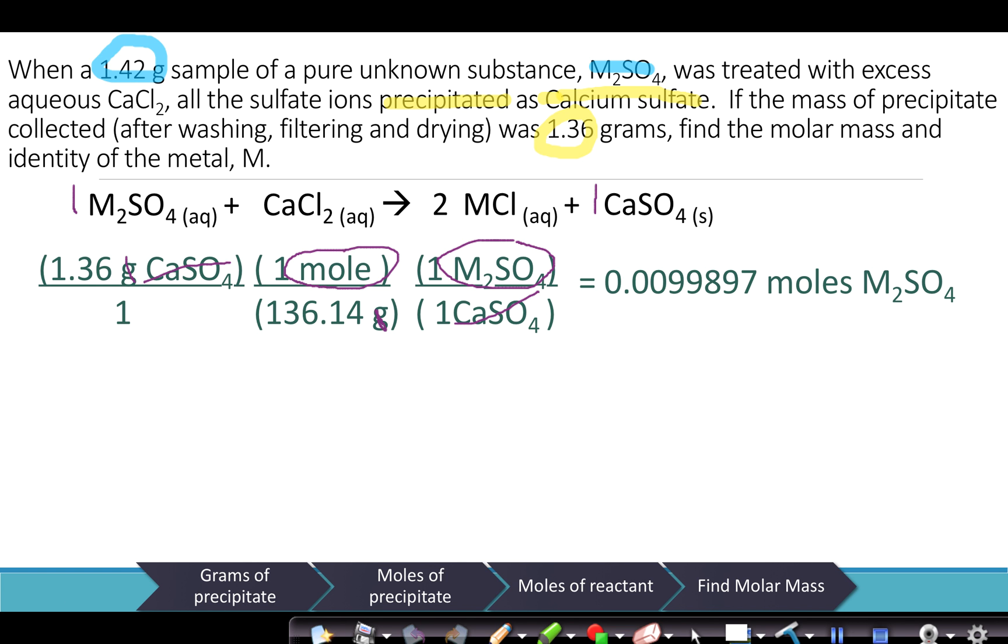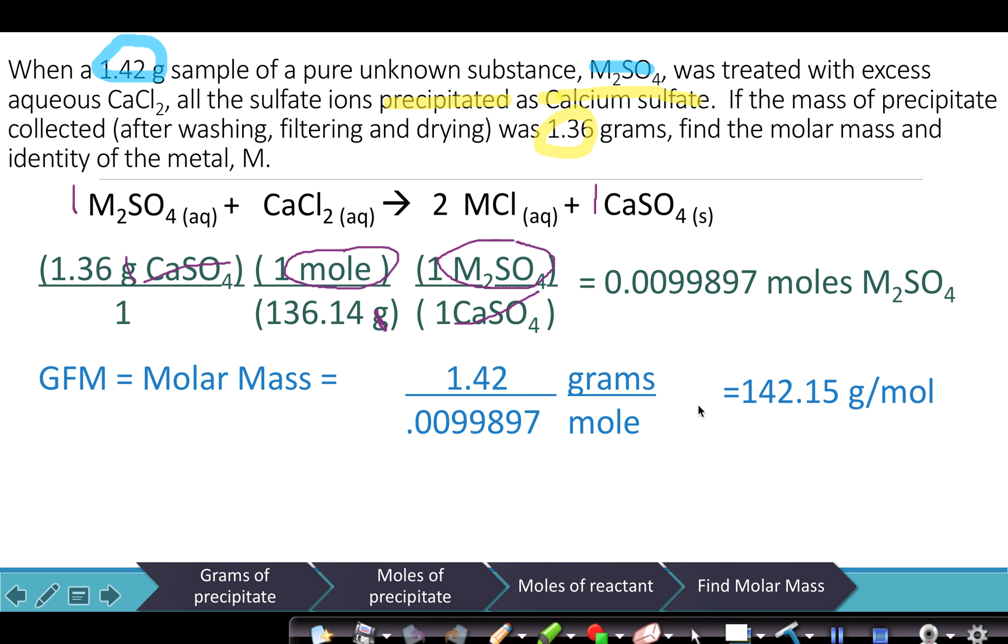When we work with moles and grams, we know that this number of moles of M₂SO₄ was equal to our original 1.42 grams of M₂SO₄ that we put in. And we know that to get the gram formula mass, which is the same thing as the molar mass, we're going to put our grams over moles because the unit for molar mass is grams per mole. So if I look back in the problem again, it was 1.42 gram sample for 0.0099897 moles of M₂SO₄, and when I simply divide this out, I get my gram formula mass of 142.15 grams per mole.